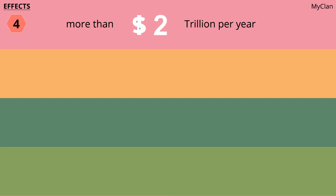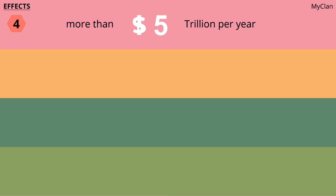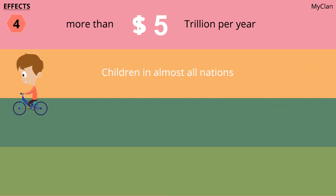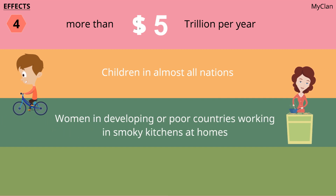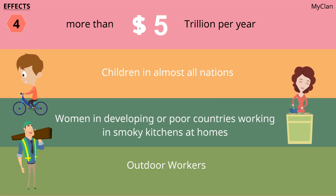Loss of productivity and a degraded quality of life caused by air pollution are estimated to cost the world economy more than $5 trillion per year. Children in almost all nations, women in developing or poor countries working in smoky kitchens at home, and outdoor workers like factory laborers, street vendors, and traffic officers are most impacted by air pollution.